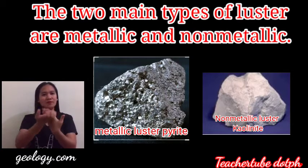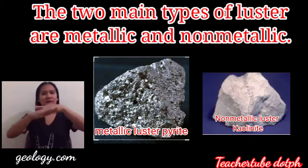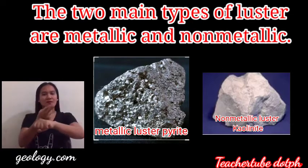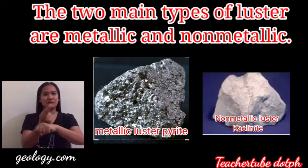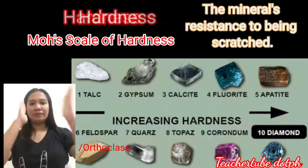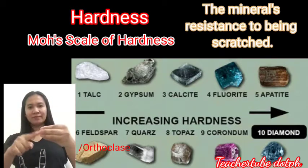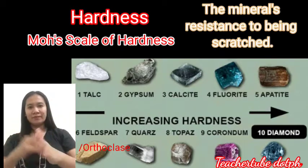Here we have an example of metallic luster — the pyrite — and kaolinite is an example of non-metallic luster. Next is hardness: it refers to the mineral's resistance to being scratched.